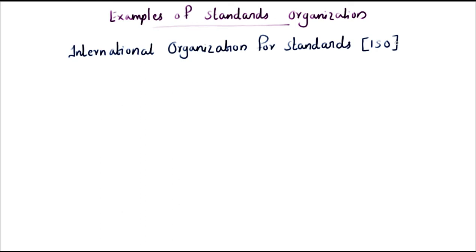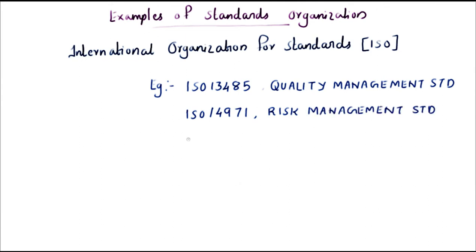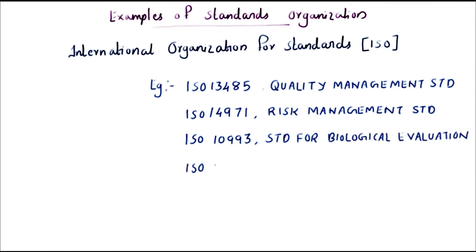I have some examples listed here. The first one is ISO 13485, which is a quality management standard. ISO 13485 establishes the requirements for a good quality management system for both the design and manufacture of medical devices. ISO 14971 is a risk management standard that defines the application of risk management to medical devices. ISO 10993 is a standard for the biological evaluation of medical devices, and ISO 11607 is a standard for the packaging for terminally sterilized medical devices.